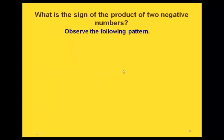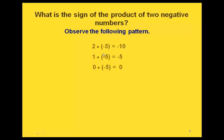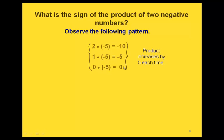Our next question is what would happen if we had two negative numbers and were finding their product. Again we're going to look at a pattern. Assuming what we found — that a positive times a negative gives a negative — we have 2 times negative 5 is negative 10, 1 times negative 5 is negative 5, and 0 times negative 5 is 0. Our factors are going down by 1, and our product is increasing by 5 each time.